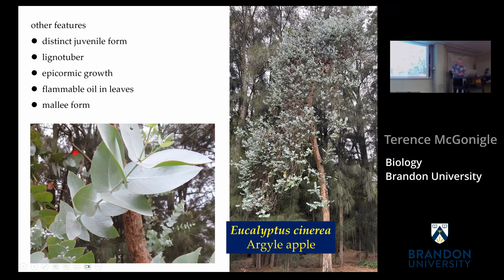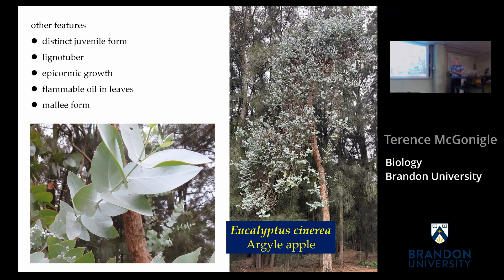For fire adaptation, there's the lignotuber — a bulge at the base of the trunk that will regrow following fire. There's also epicormic growth, where new leaves and little branches can grow straight out of the trunk following fire to recover. In a way, eucalyptus encourage their own fire: the leaves are highly flammable from eucalyptus oil, which cleans out the neighbors by causing a catastrophic fire. But they can recover with their lignotuber and epicormic growth, monopolizing the area after the fire passes through.